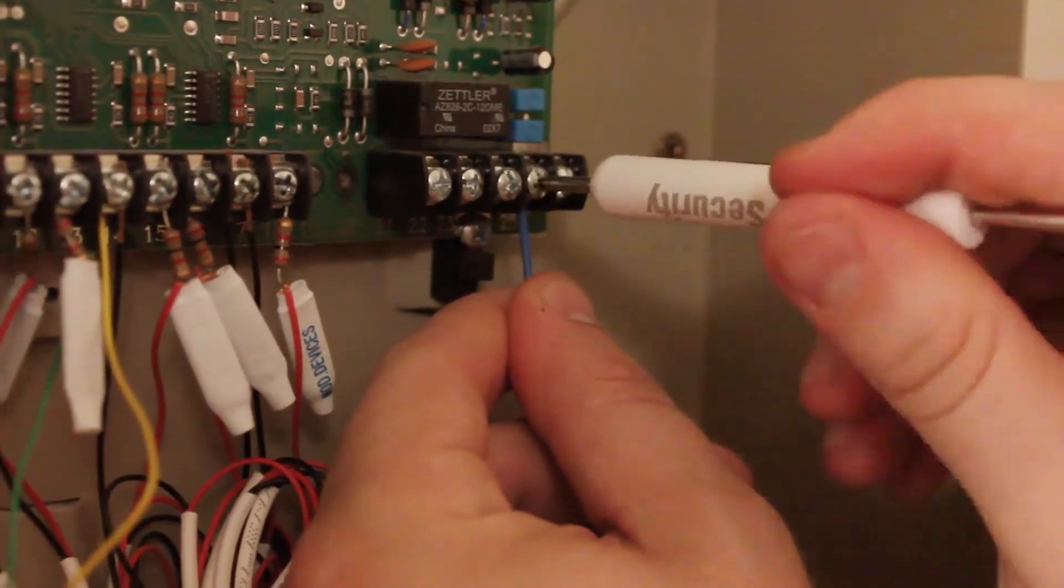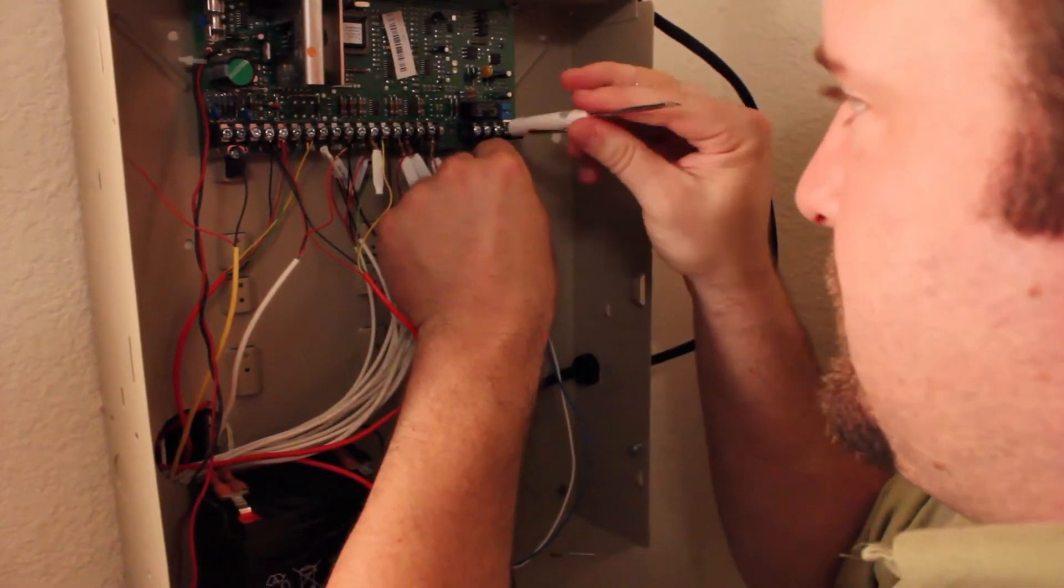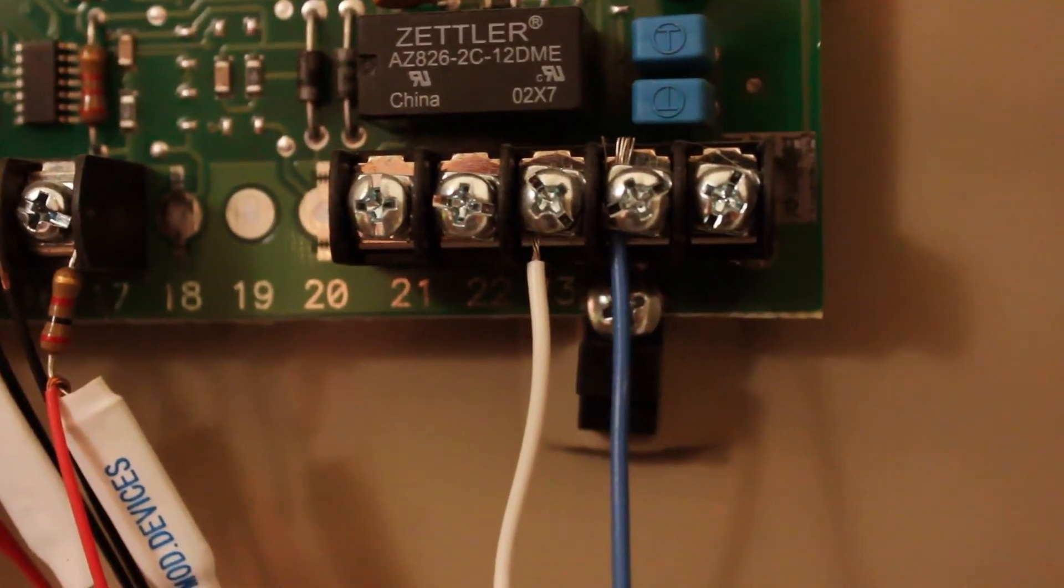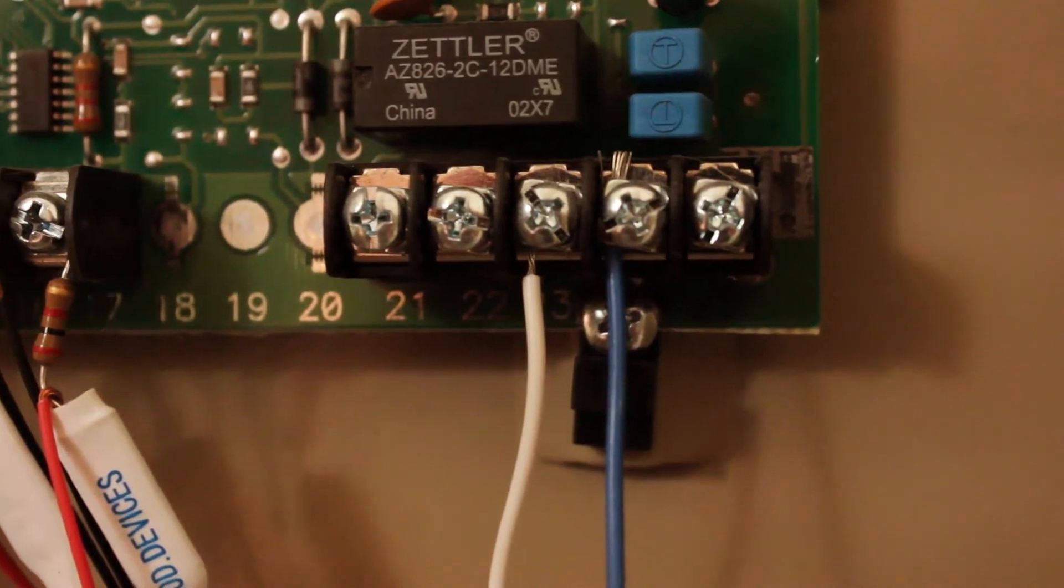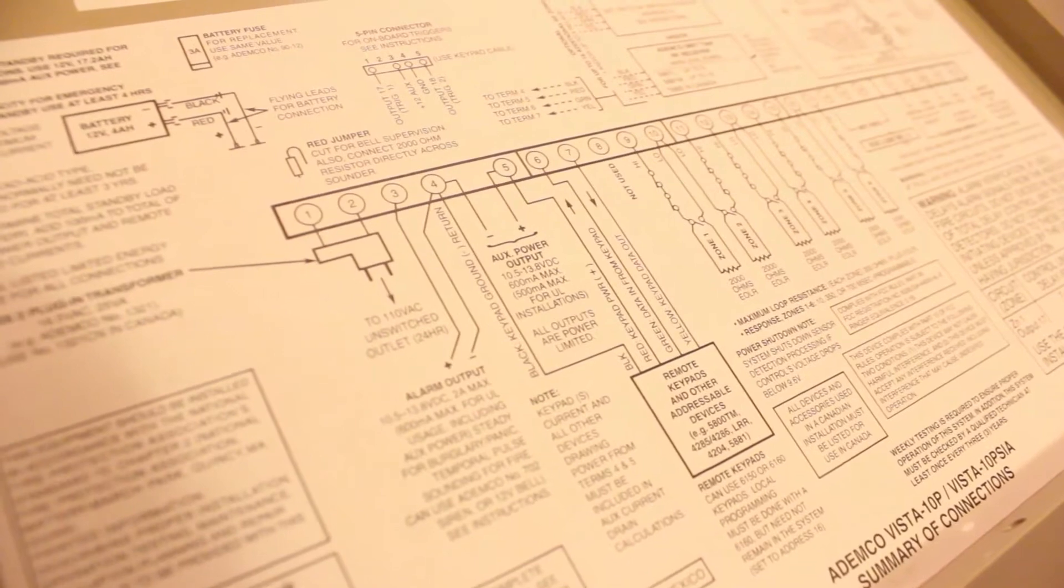Insert the blue and white wires from the conversion device into the tip and ring pins. It doesn't matter which color wire goes where; there is no polarity. Some panels can have different pin arrangements, make sure to consult the schematic.